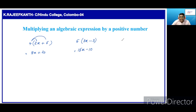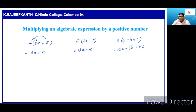If there are three terms — for example, a plus b plus c — and you want to multiply by 3, then we have to multiply by 3 all three terms. Then, 3 into a is 3a, plus 3 into b is 3b, plus 3 into c is 3c.